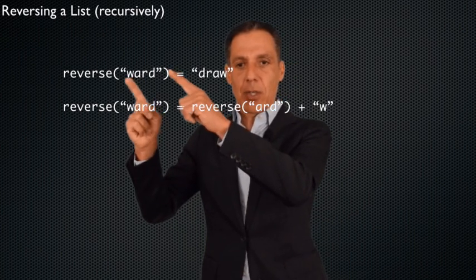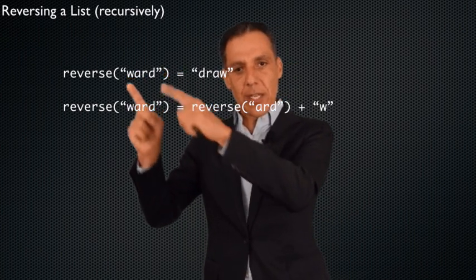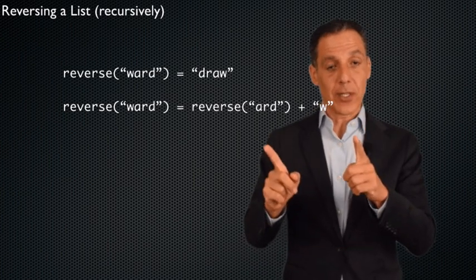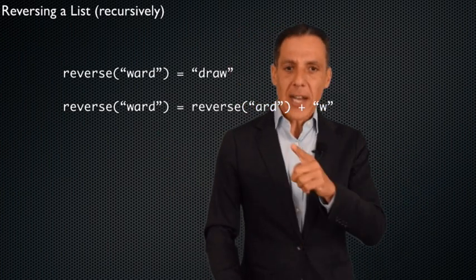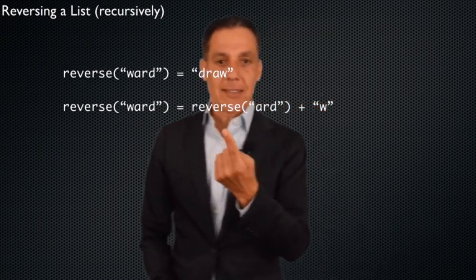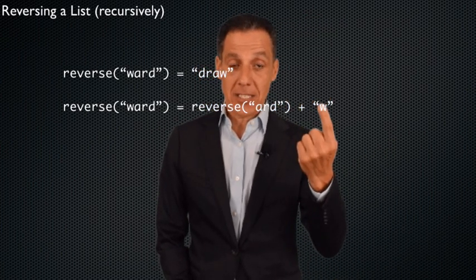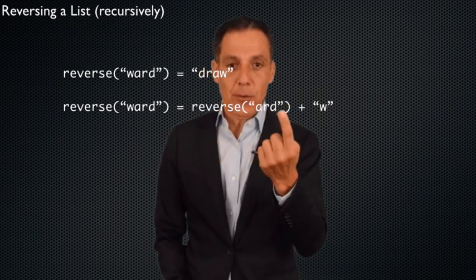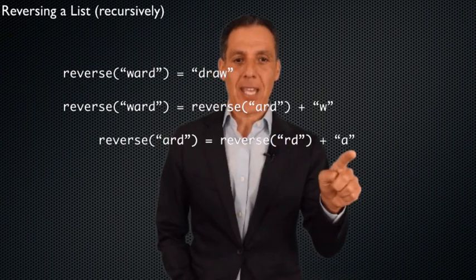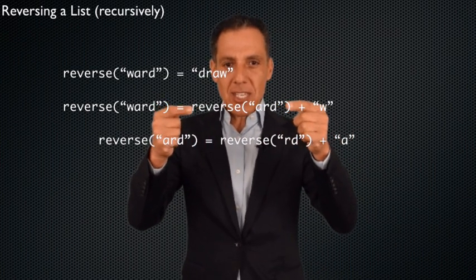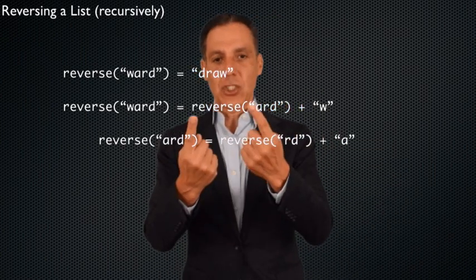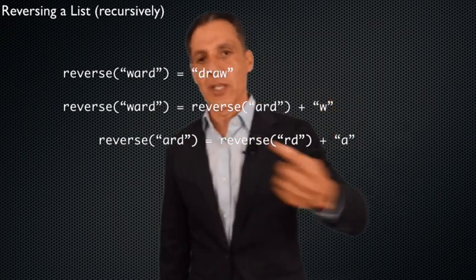Notice I've defined the reversing of an entire string as the reversing of a slightly smaller string plus a simple operation. It looks a lot like the factorial — n factorial was n times (n-1) factorial. So let's do it again to make sure we see how we reverse 'a-r-d'. Same game: take that 'a', shove it to the end, and then reverse 'r-d' at the front of that. So the reversal of 'a-r-d' is the reversal of 'r-d' plus 'a'. This will eventually give me an answer as I work my way down the recursion — I'll get 'd-r-a', attach the 'w', and I'm done.